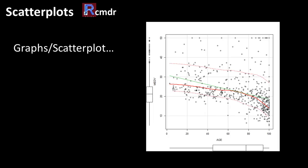This has been plotted using R Commander's Graphs > Scatter Plot option. It plots all 500 data points, but also includes a smooth line showing the general trend and other lines indicating upper and lower boundaries. For now what we are most interested in is the scatter plot itself.